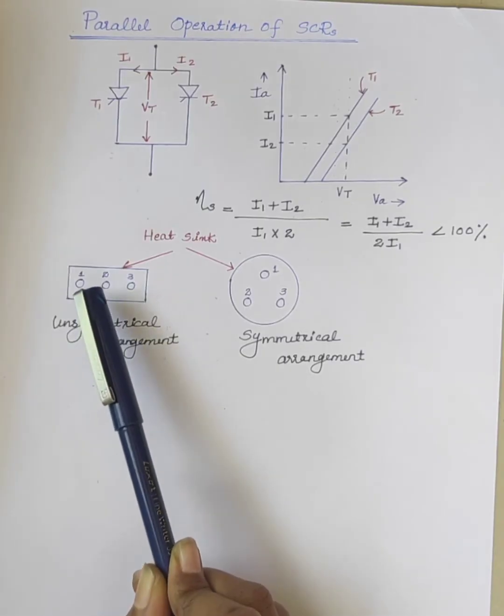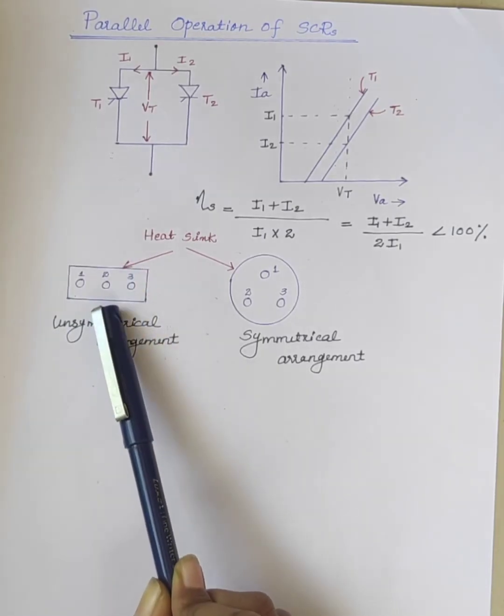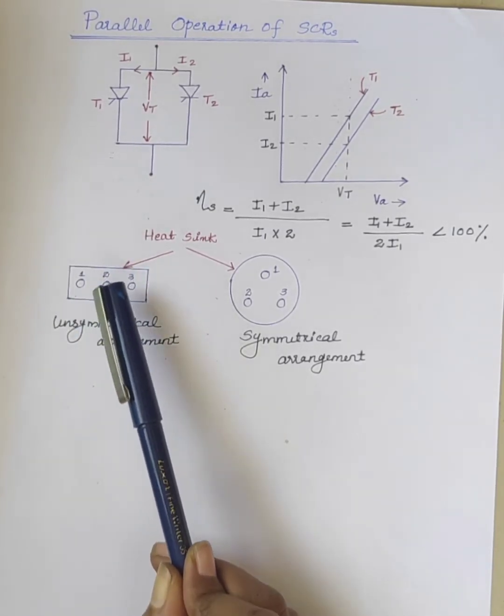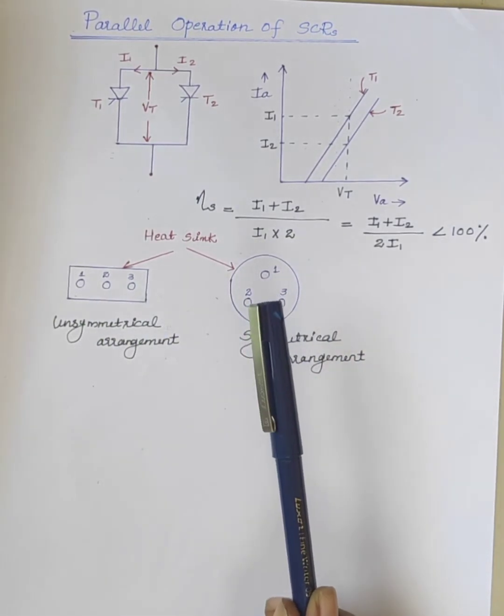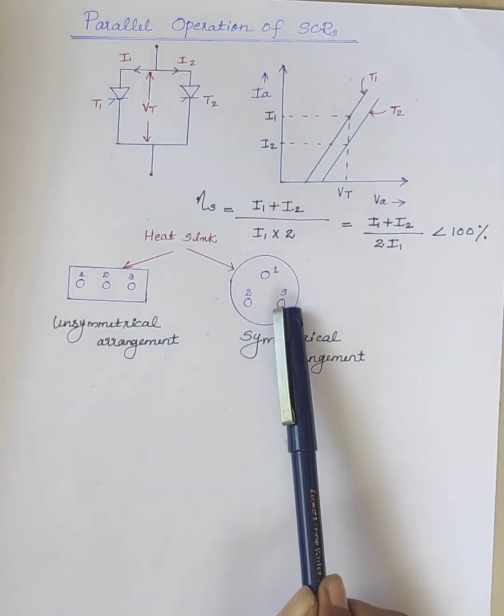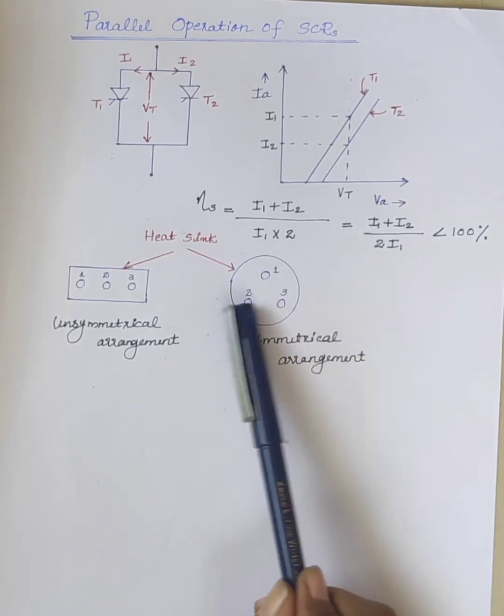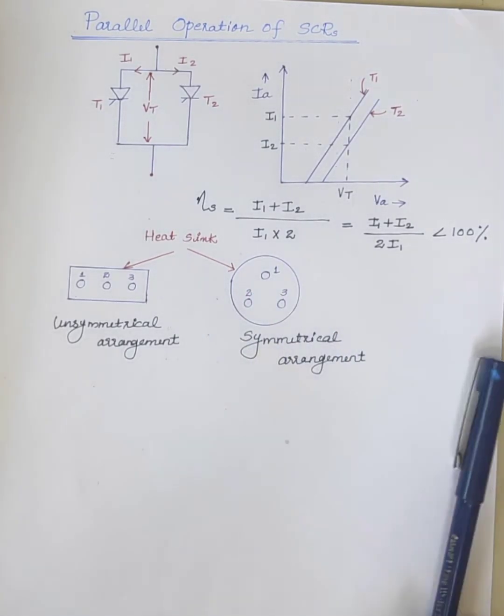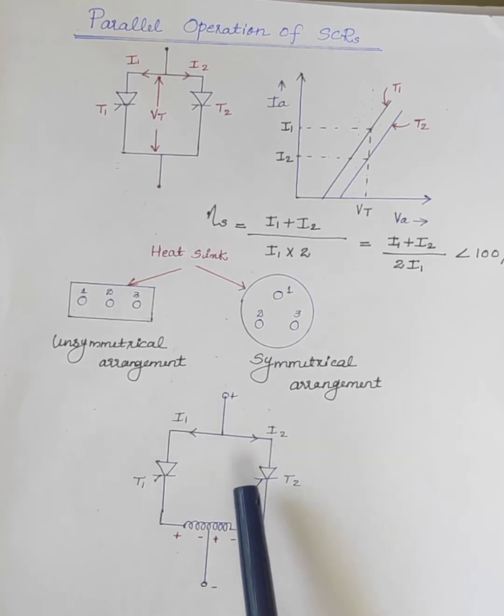This problem of unequal current sharing due to unsymmetrical spacing can easily be avoided by mounting all the SCRs symmetrically. The symmetrical mounting will cause equal flux linkage of all the conductors 1, 2, and 3, therefore equal inductance. Therefore, the current flow in all the SCRs will be equal. Another way of equalizing current division in AC circuits can be achieved by using magnetic coupled reactors.